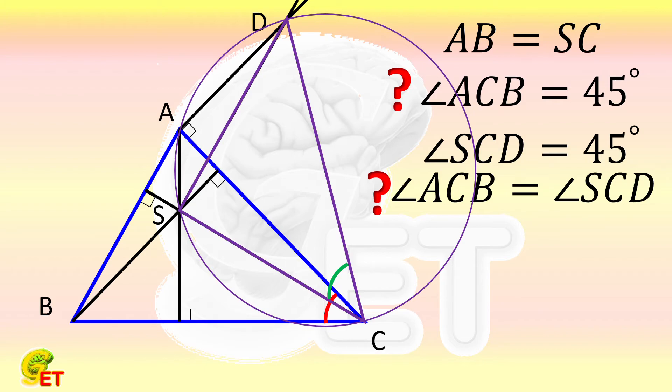Then the angles ACD and ASD are the angles of the circumference subtended by the same arc, so they must be equal to each other.